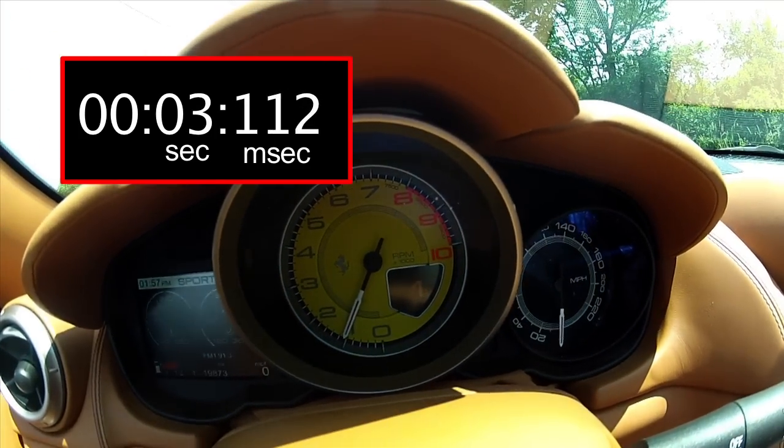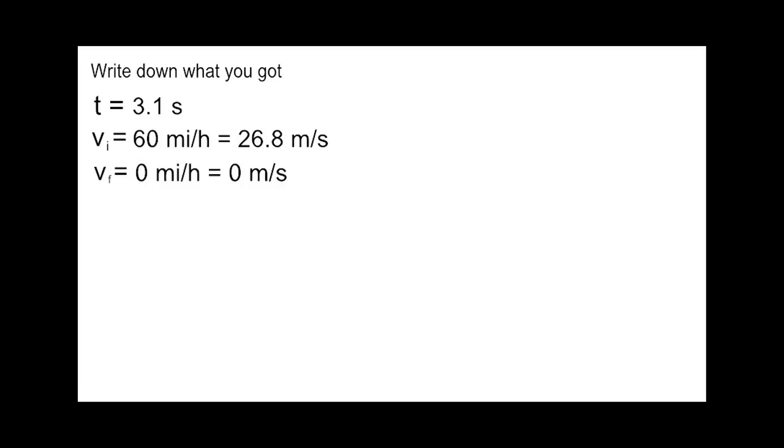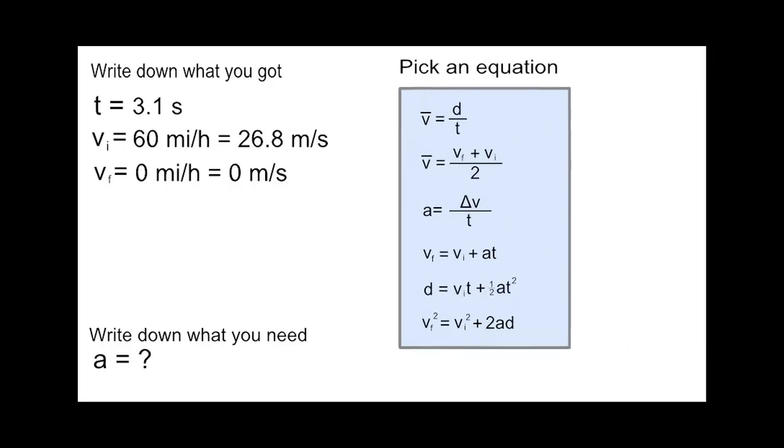The time comes out to be about 3.1 seconds. So write down what you got: the time is 3.1 seconds, the initial velocity this time is 60 miles per hour, and the final velocity is zero since we stopped. Write down what you need: we're now looking for the acceleration. Just like before, we pick an equation. Since we already did this same calculation before, we know that the formula that we want is vf equals vi plus at.